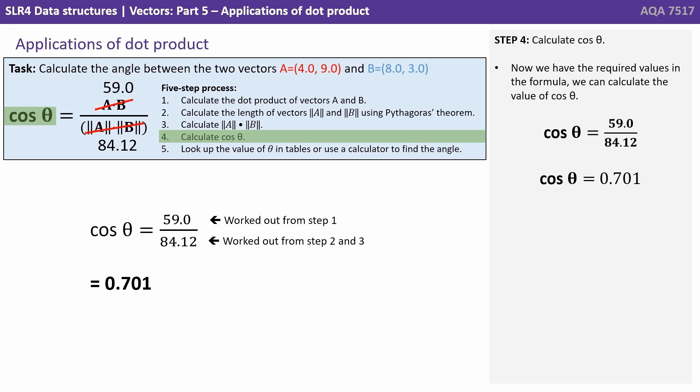We now move on to step four which is to calculate cos θ. Now we have the acquired value in the formula we calculate the value of cos θ by dividing the top value by the bottom value. So we get 0.701.